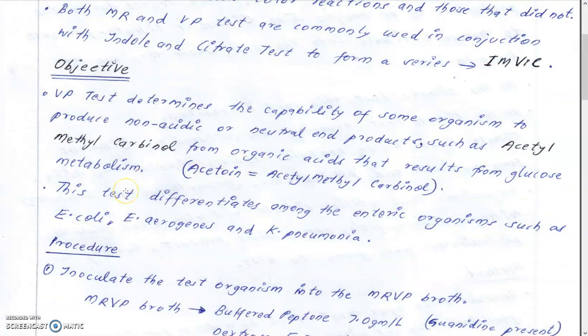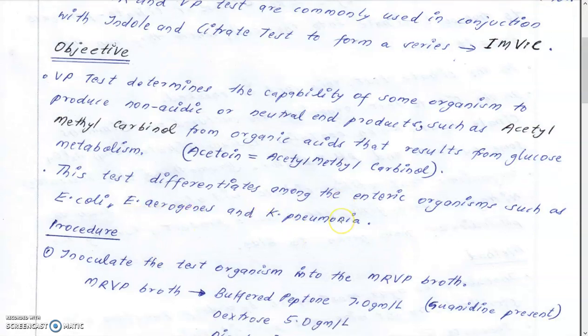This test differentiates among the enteric organisms such as E. coli, Enterobacter aerogenes, and Klebsiella pneumoniae.